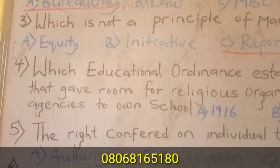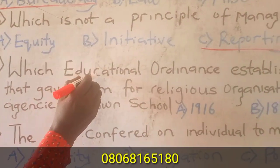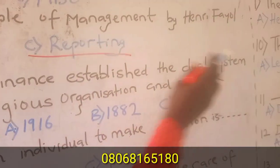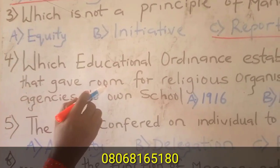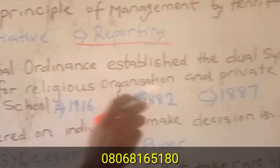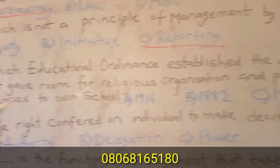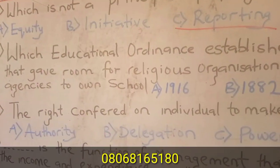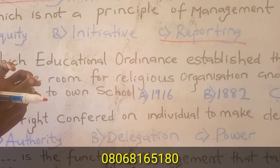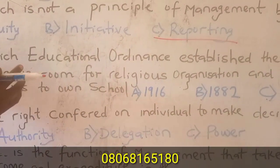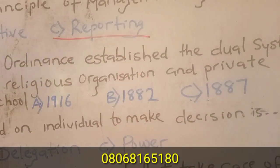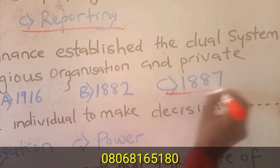Question four: Which educational ordinance established the dual system that gave room for religious organizations and private agencies to hold a school? There is an ordinance that gave room for churches and private individuals to have their own schools. That ordinance was passed in 1887.